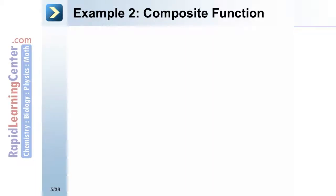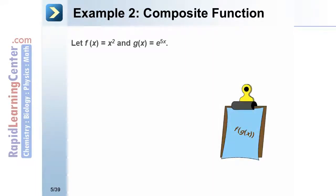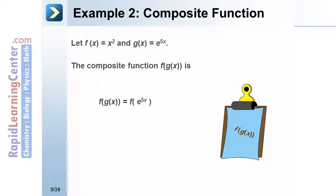Let's look at a second example of a composite function. Suppose we had f of x equal to x squared and g of x equal to e to the 5x power. If we take the composition f of g of x, we take the value of g of x, which is e to the 5x power, and put it in place of x in the function f. This gives us the quantity e to the 5x power, squared, which we simplify to e to the 10x power.